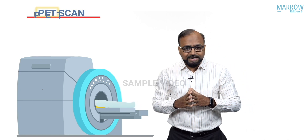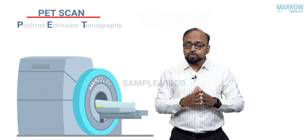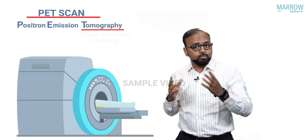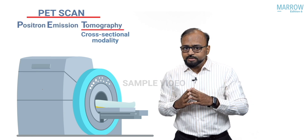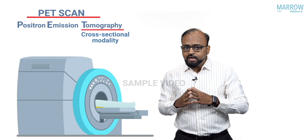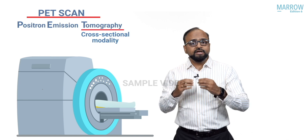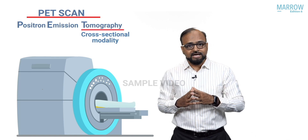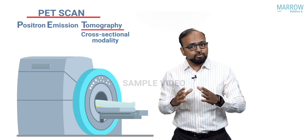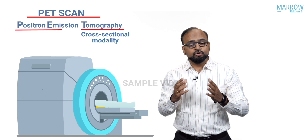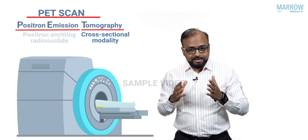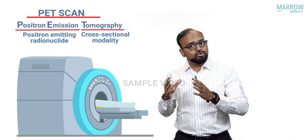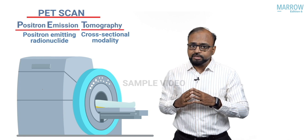What is PET? PET stands for Positron Emission Tomography. Tomography means it is a cross-sectional imaging modality. The radioisotope or radionuclide used in PET scan is one that emits positrons, and that is how the name Positron Emission Tomography was created.